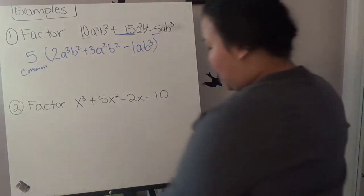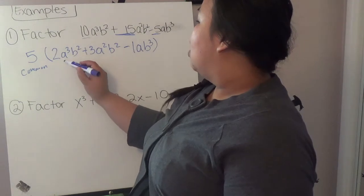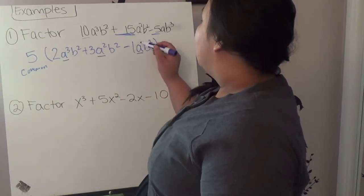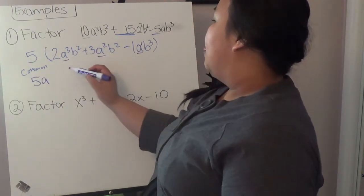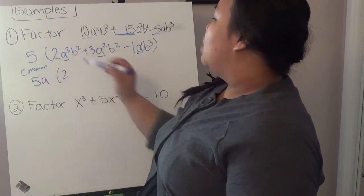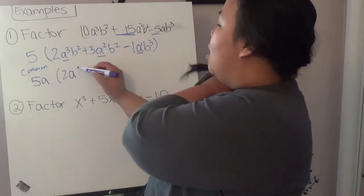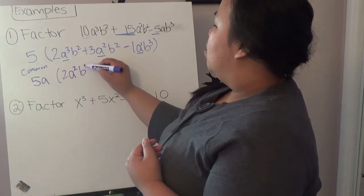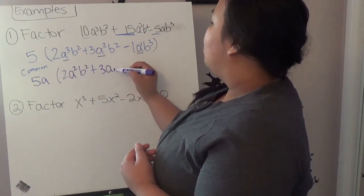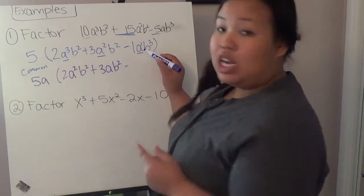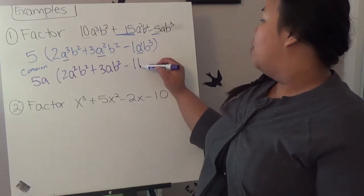Now let's focus on variables. Looking at the a's: this term has a cubed, the next has a squared, the last has a to the 1st. So we can take out at least 1a. Taking out a from a cubed gives a squared; from 3a squared gives 3a; and from the last term, which only had 1a, leaves no a — just b cubed. Now for b's: we have b squared, b squared, and b cubed, so we can take out b squared from each.